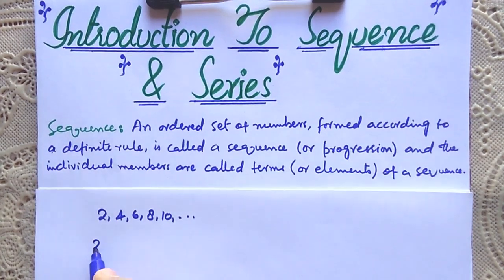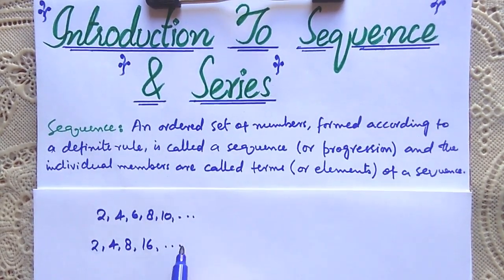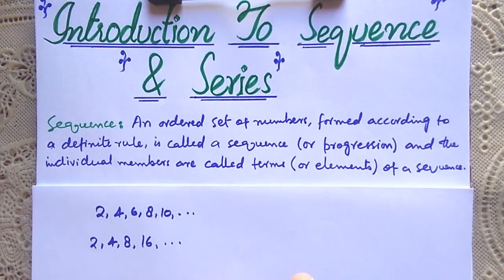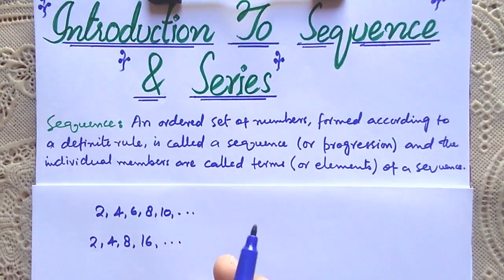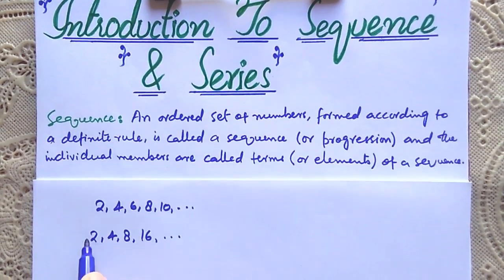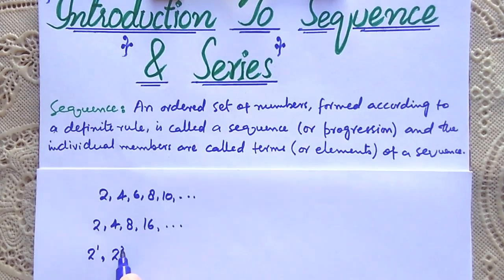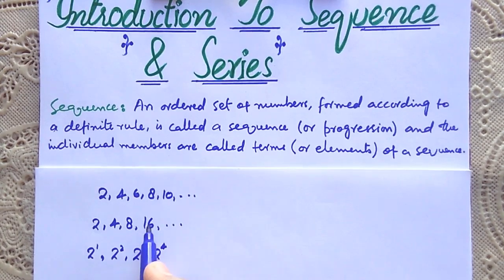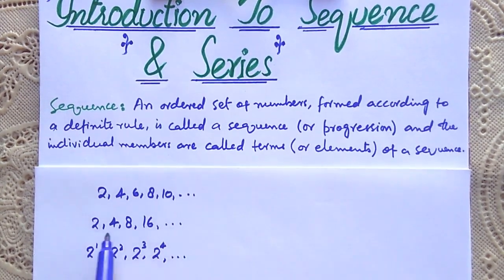Similarly, the sequence 2, 4, 8, 16, and so on is also a sequence because these are arranged in a particular order. Each term is in the form of powers of 2: 2 can be written as 2 to the power 1, 4 as 2 squared, 8 as 2 cubed, and 2 to the power 4 equals 16, and so on. So it is also a sequence.